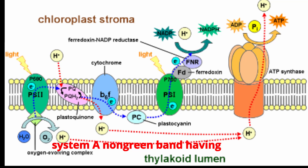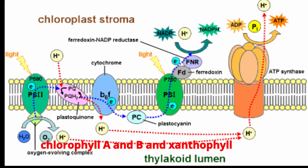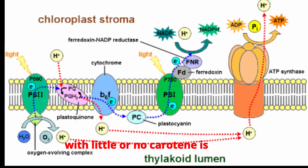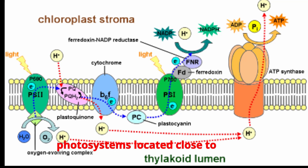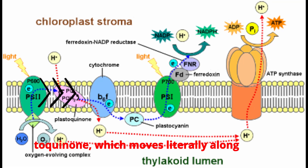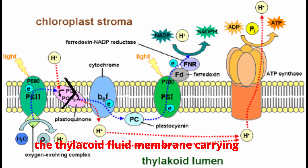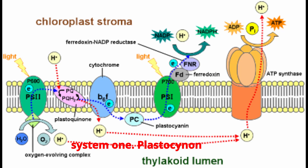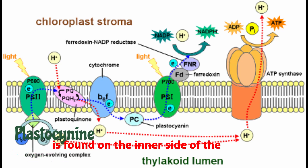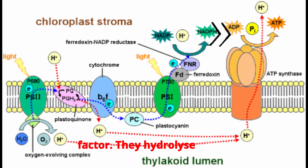The light harvesting system is a non-green band having chlorophyll A and B, and xanthophyll with little or no carotene, separated from photosystems 1 and 2. Its role is to harvest light and transfer it to the photosystems, located close to each photosystem. Plastoquinone moves laterally along the thylakoid fluid membrane, carrying electrons from photosystem 2 to photosystem 1. Plastocyanin is found on the inner side of the thylakoid. The coupling factor hydrolyzes ATP.